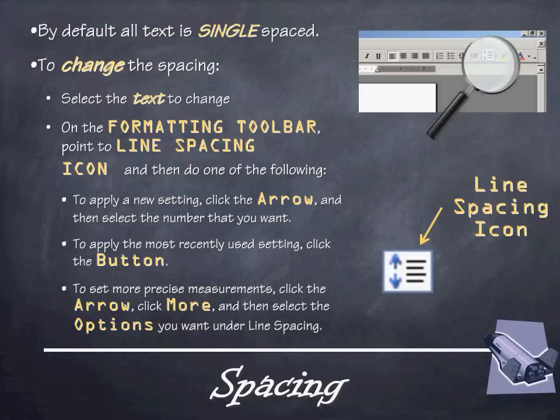Next up is spacing. When you open a Microsoft Word document, by default all text is single spaced. To change the spacing, select your text. On the formatting toolbar, point to the line spacing icon. You can apply a new setting by clicking the arrow and selecting a number, or apply the most recently used setting by clicking the icon button. For more precise measurements, click the arrow, click More, and then select the options you want. Quick keyboard shortcuts: Ctrl+1 for single space, Ctrl+2 for double space, and Ctrl+5 for 1.5 spacing.